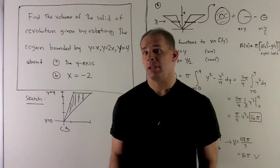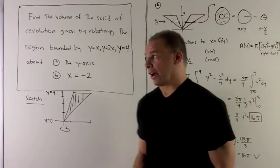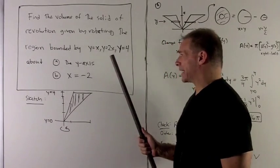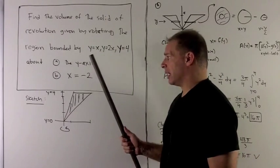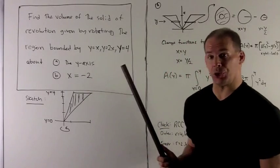Let's find the volume of the solid of revolution given by rotating the area bounded by y equals x, y equals 2x, and y equals 4 about the y-axis, and then about the vertical line x equals minus 2.